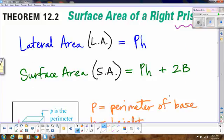Okay, so surface area of a right prism. We have the lateral area, we abbreviate LA. That's just perimeter times the height. And then the total surface area is the lateral area, perimeter times height, plus two times the area of the bases.